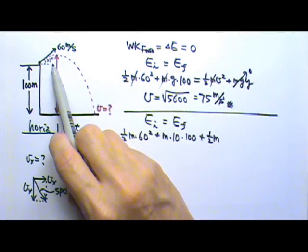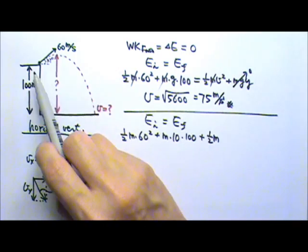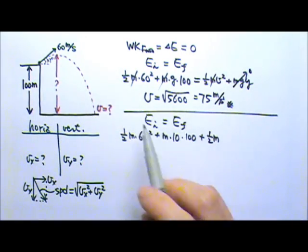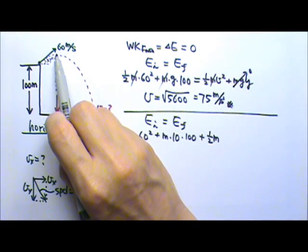So whatever initial horizontal velocity the projectile has, it has that same horizontal velocity the entire time. So at the maximum height, there is no vertical velocity,